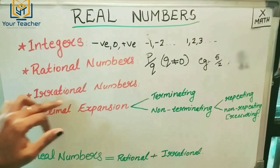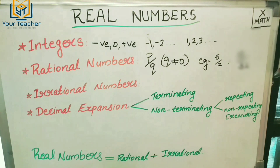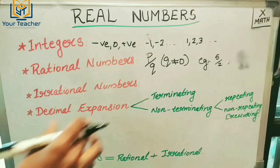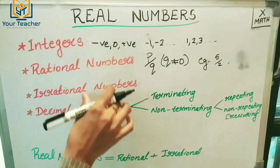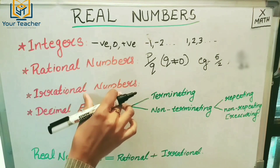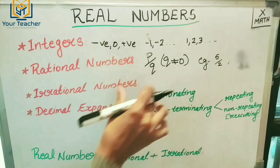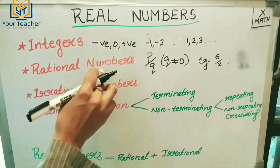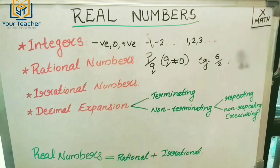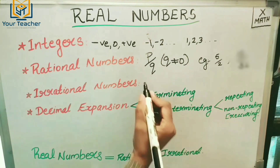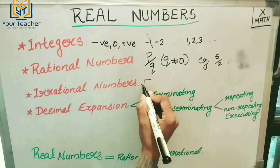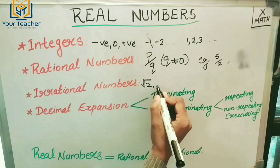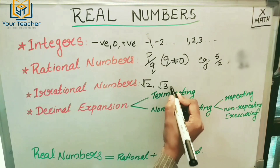Irrational numbers — what are irrational numbers? Irrational numbers are just opposite of rational numbers. Rational numbers can be written as P by Q, but irrational numbers cannot be written in that form. For example, root two, root three, etc.